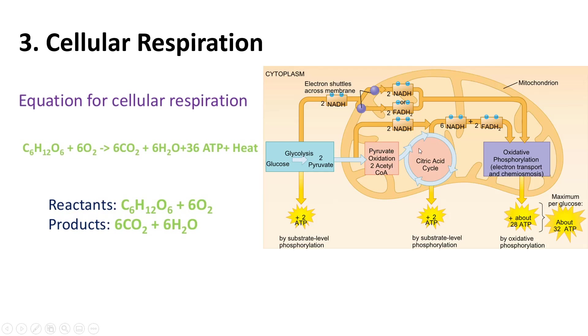When you use the Krebs cycle to make these electron carriers, you get 2 ATP. But when you use the electron transport chain in the mitochondria, you get about 28 ATP. That is a lot in comparison to everything else.